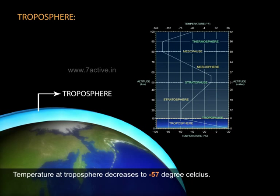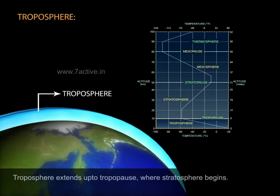Temperature at troposphere decreases to minus 57 degrees Celsius. Troposphere extends up to tropopause, where stratosphere begins.